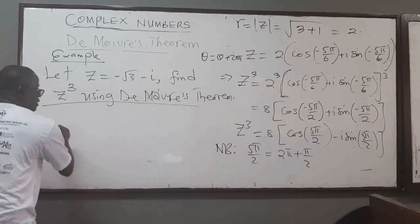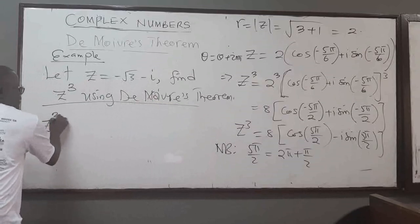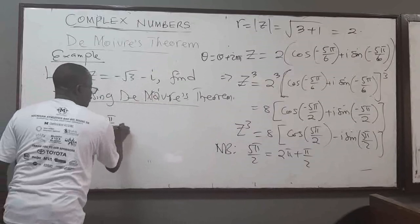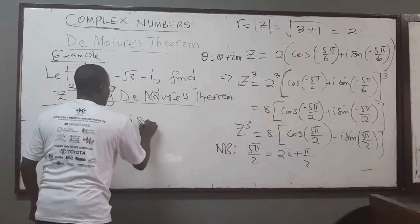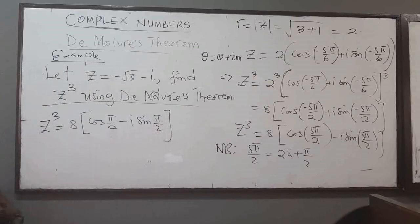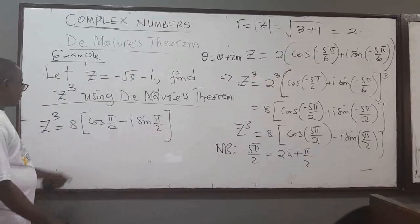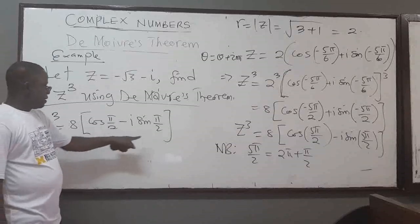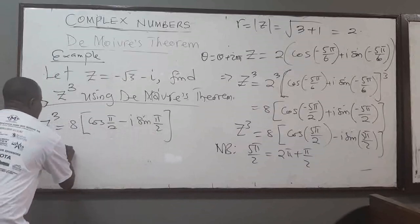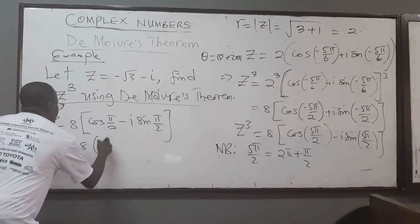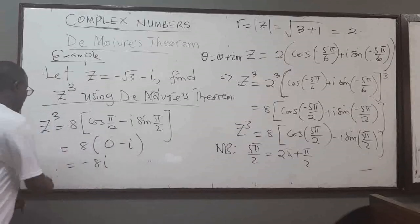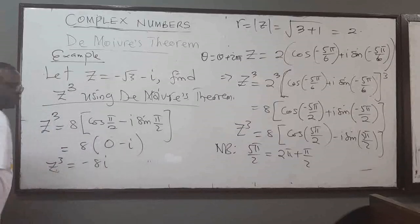Which means I can write z to the power 3 as 8·(cos(-π/2) + i·sin(-π/2)). Cosine of negative π/2 is 0, and sine of negative π/2 is negative 1. So this is just equal to 8·(0 - i), which is negative 8i. That is the result of z to the power 3.